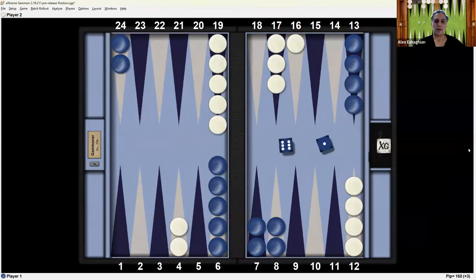Now blue has a 6-1 to play. So take a look at this. Think about how you would play the 6-1. Pause the video and then we'll look at the analysis.